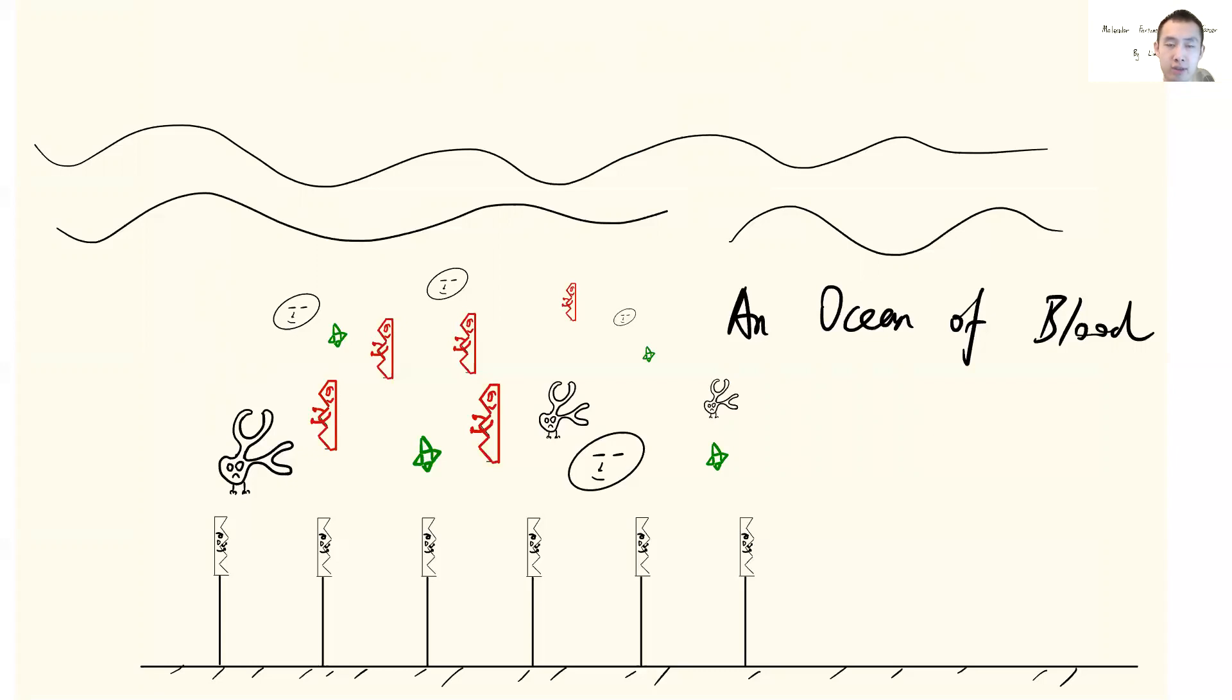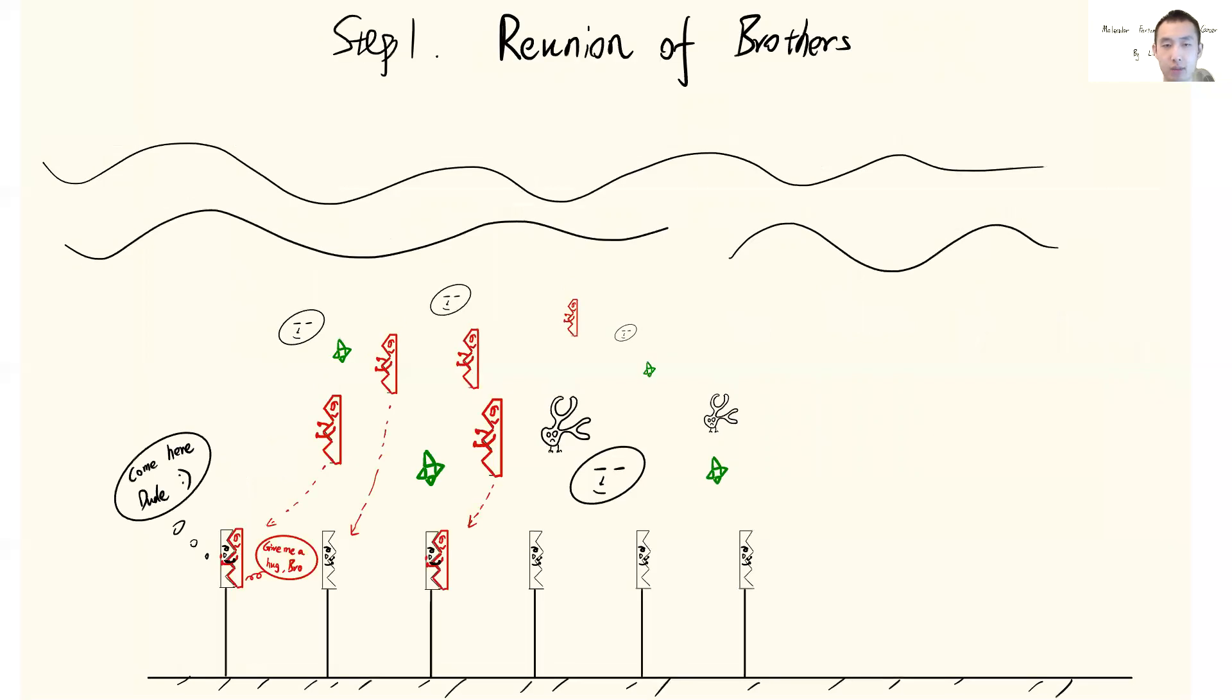But the most interesting thing to us is stretches of DNA strands, shown by the red guy inside that blood. So we put that droplet onto a surface containing a layer of black guy, which is the other strand of DNA duplex. And there will be some interesting interaction happening, which is our first step, the reunion of brothers.